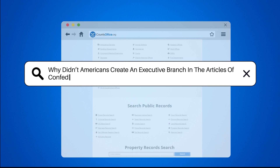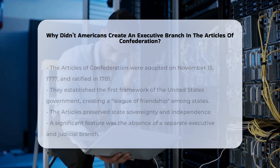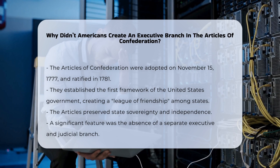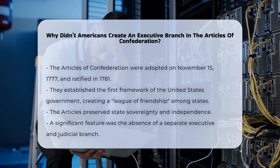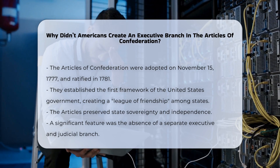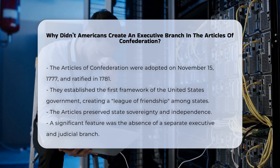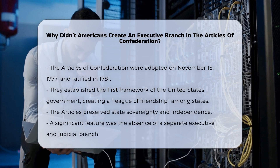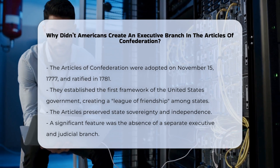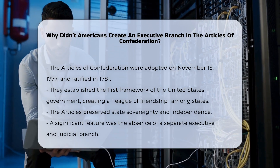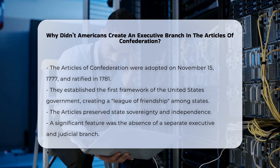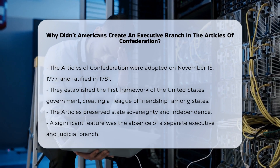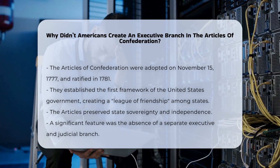Why didn't Americans create an executive branch in the Articles of Confederation? The Articles of Confederation, adopted by the Continental Congress on November 15, 1777, and ratified by the states in 1781, formed the first framework of the United States government. This document created a league of friendship among the states, preserving their sovereignty and independence. One of the key features of the Articles of Confederation was the absence of a separate executive branch and judicial branch.